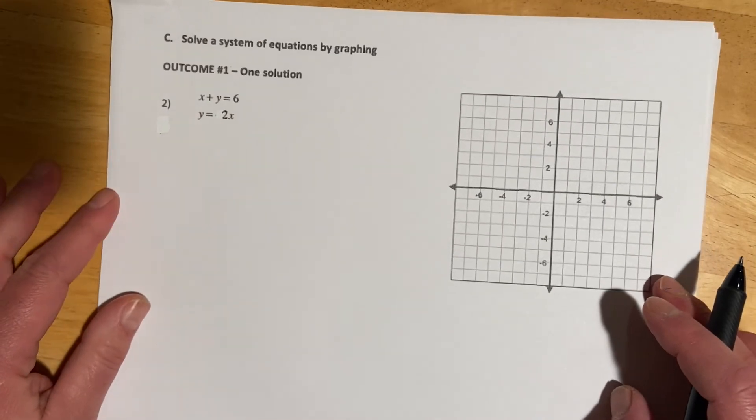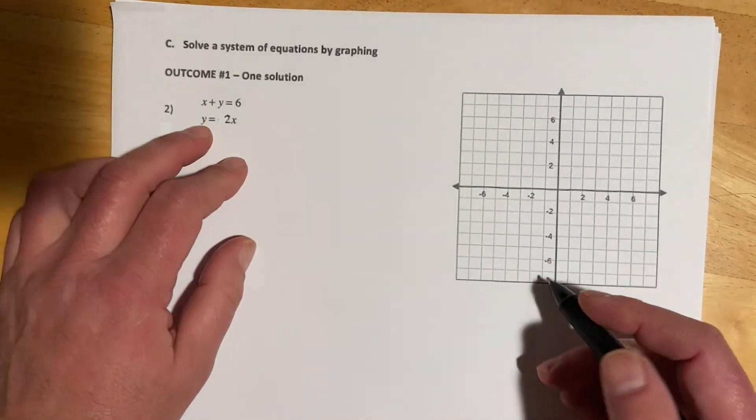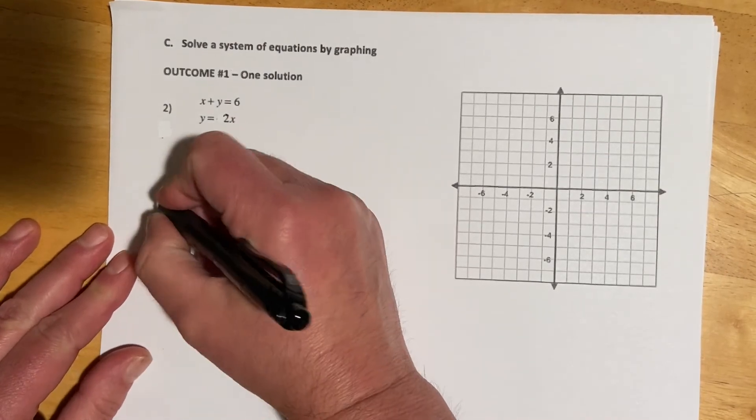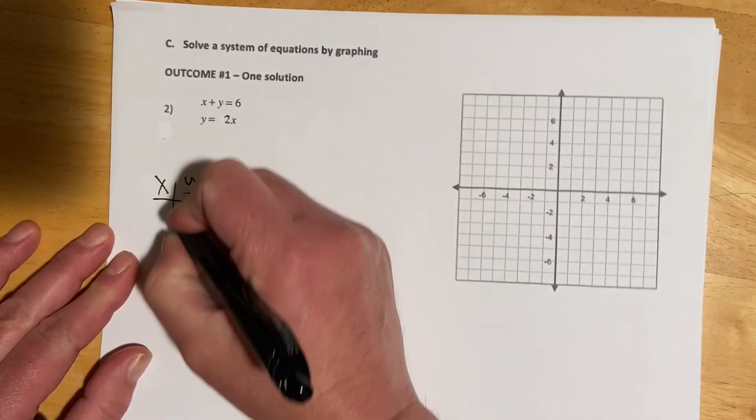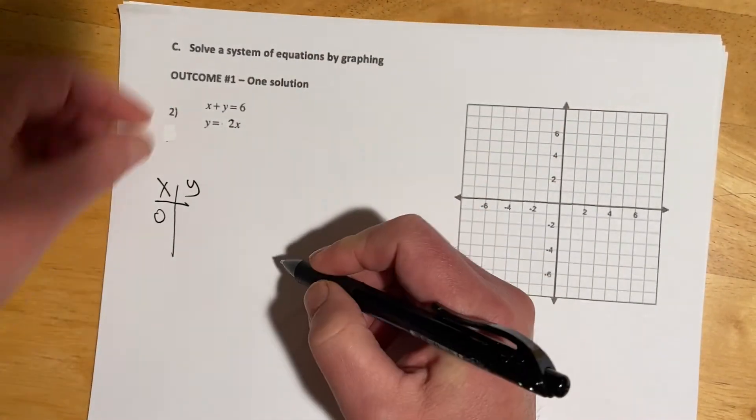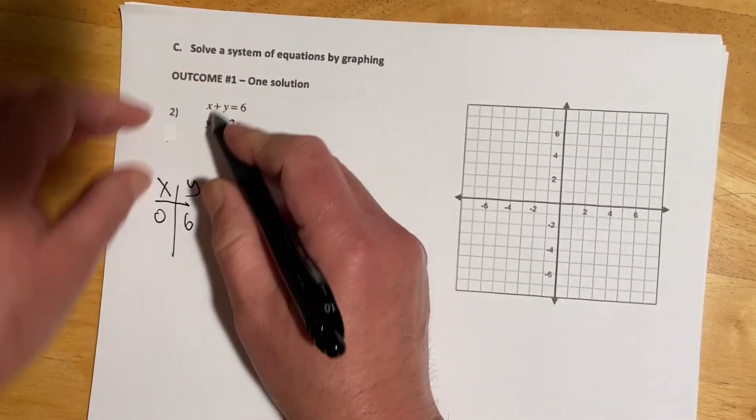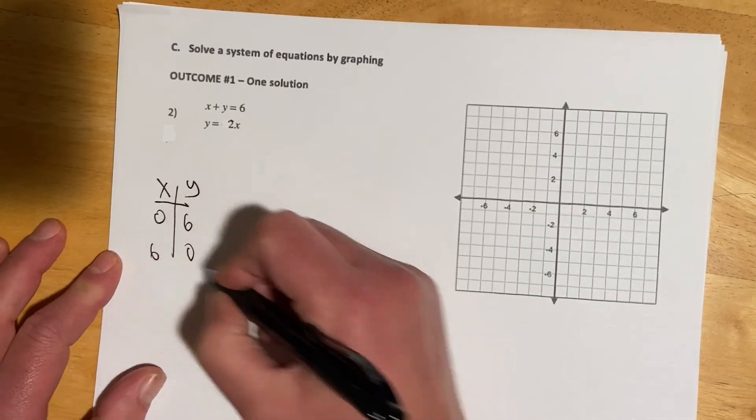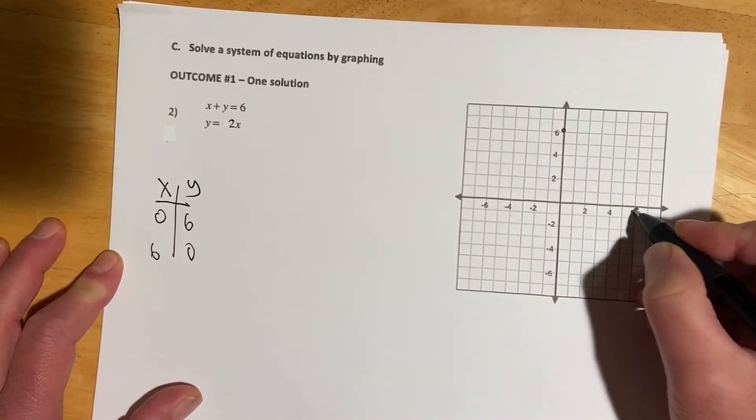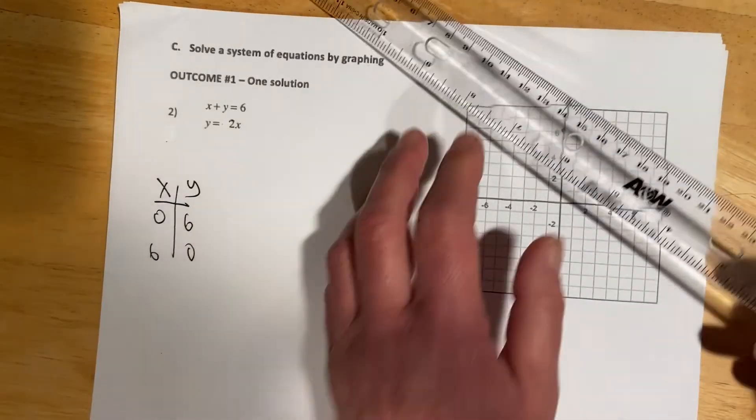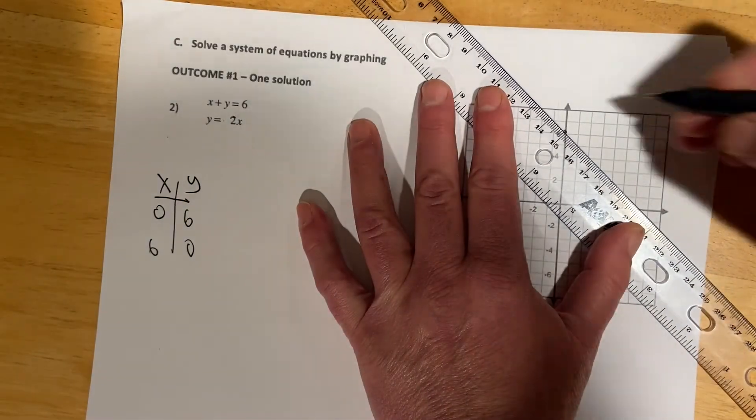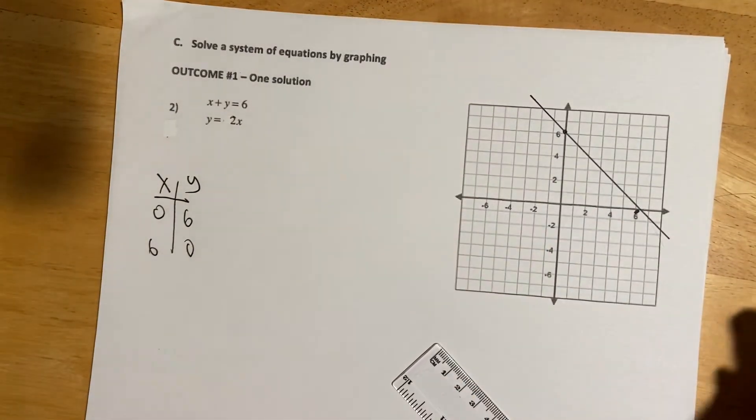So for this one, we're supposed to solve the system by graphing. So x plus y equals 6. If we're in standard form, I would just do the intercepts, because that's the easiest way to get there. So if x is 0, then y is 6. And if y is 0, x is 6. So that would be right here. And I'll attempt to draw a straight line.